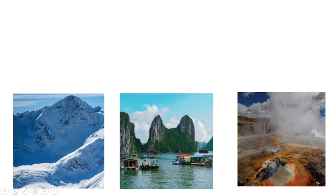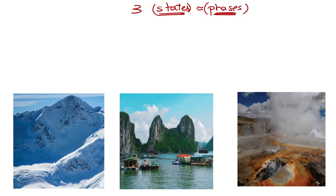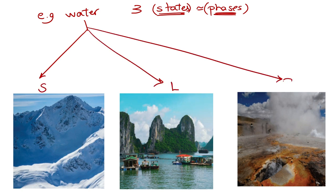Matter is made of tiny particles and is categorized into three states — also called three phases of matter. You should know both words. For example, water can exist as a solid (ice), as a liquid (liquid water), and as a gas (water vapor). So three states or three phases of matter.